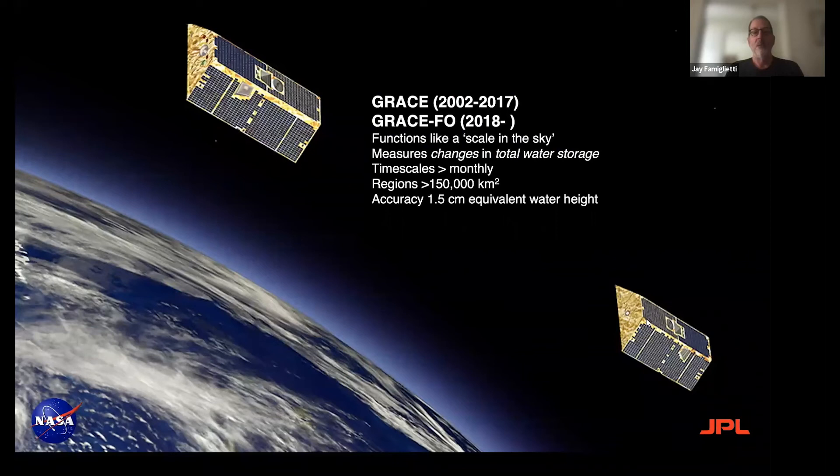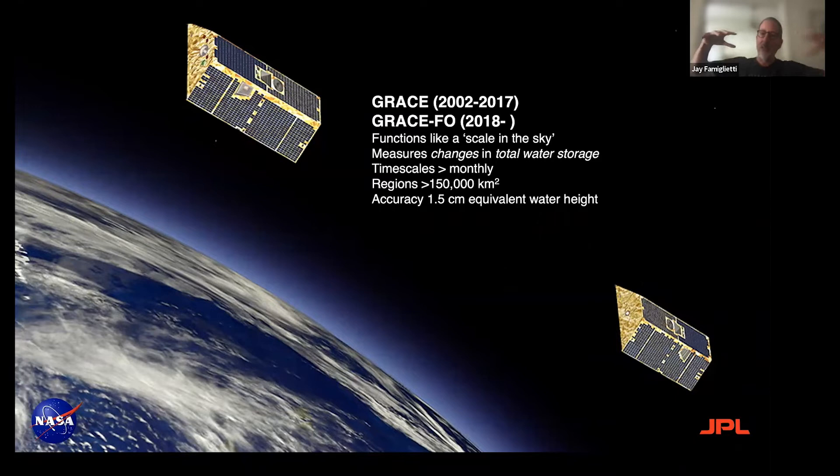What happens is the satellites respond to mass changes on the ground. When there's more water mass on the ground, say because of a big flood, that region exerts a greater gravitational tug on the satellites, pulls them down a little bit, and stretches out the inter-satellite distance. And the same thing happens when there's less water on the ground, like the drought in the American Southwest — less of a gravitational tug and they float a little bit higher.